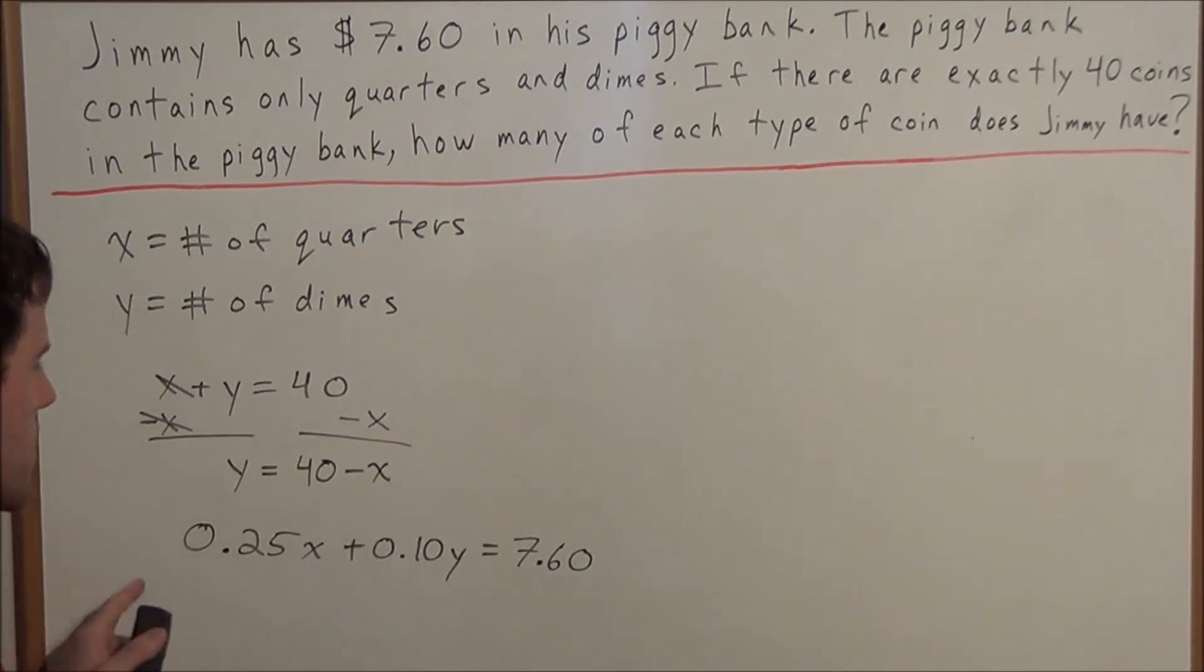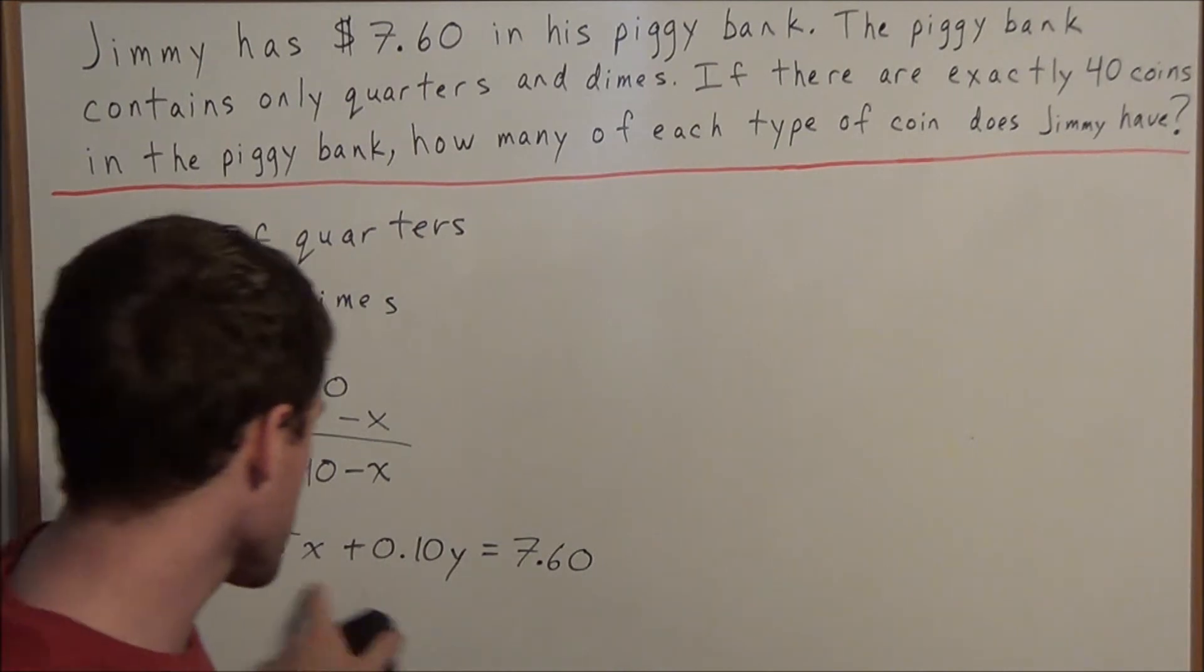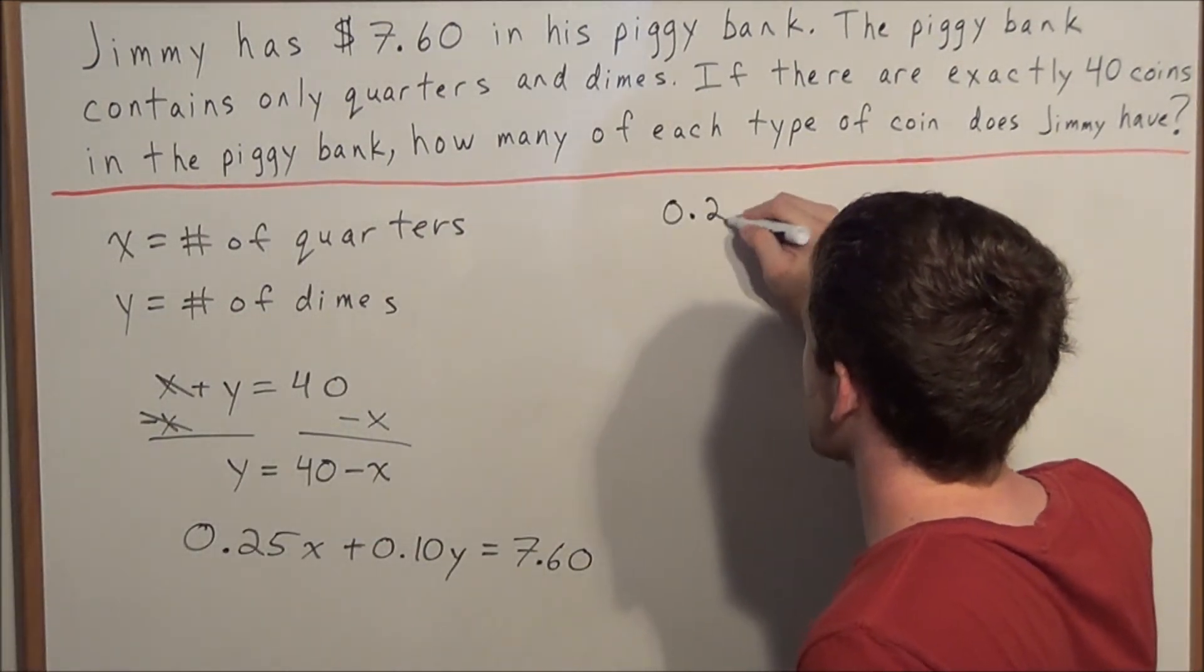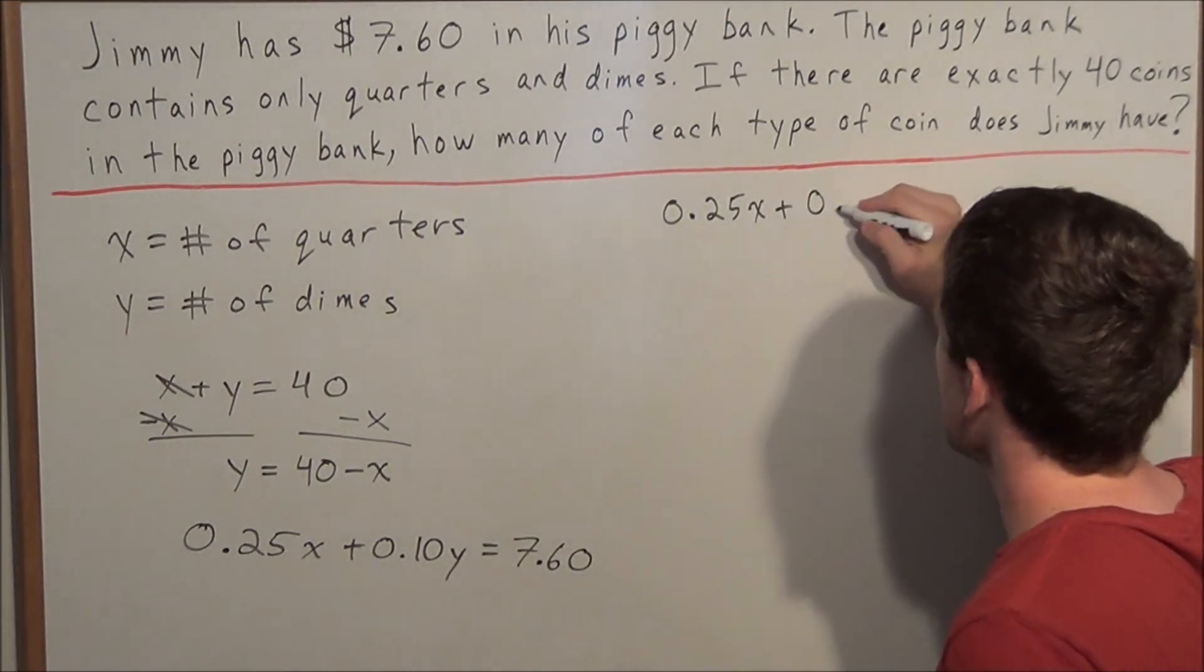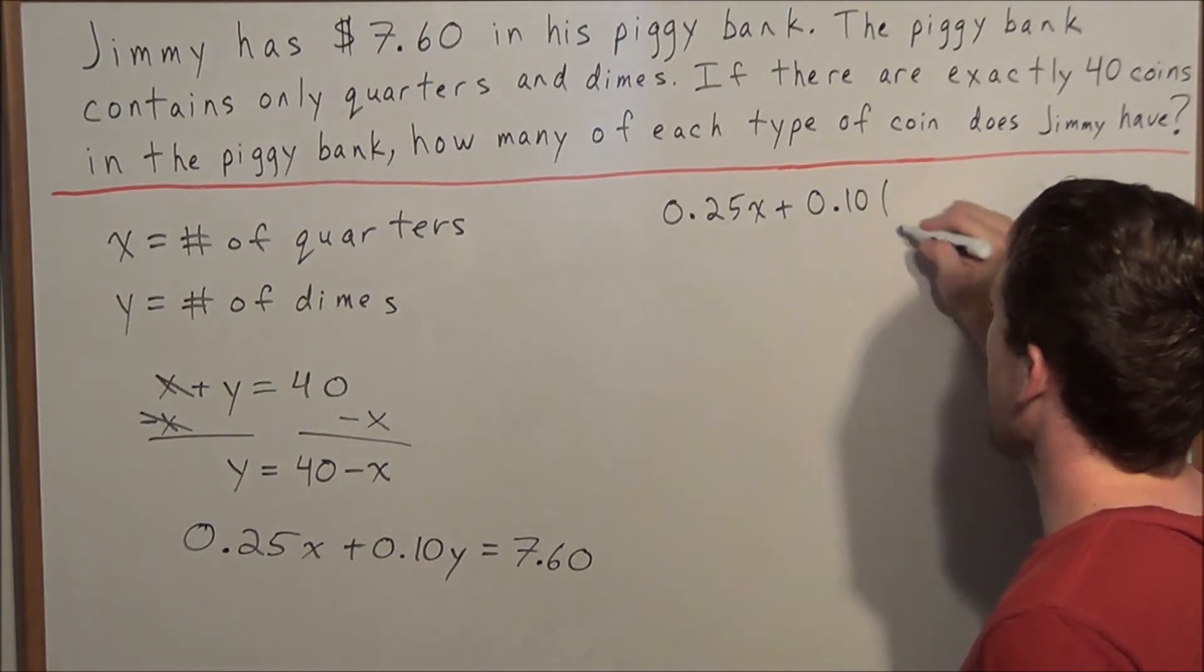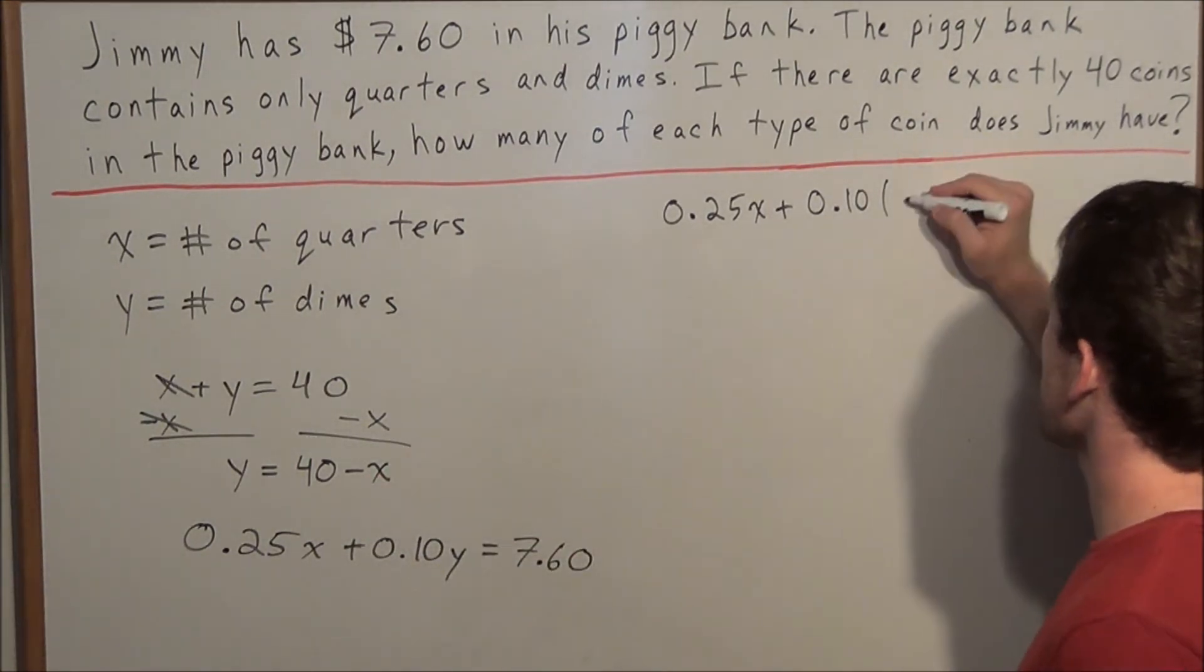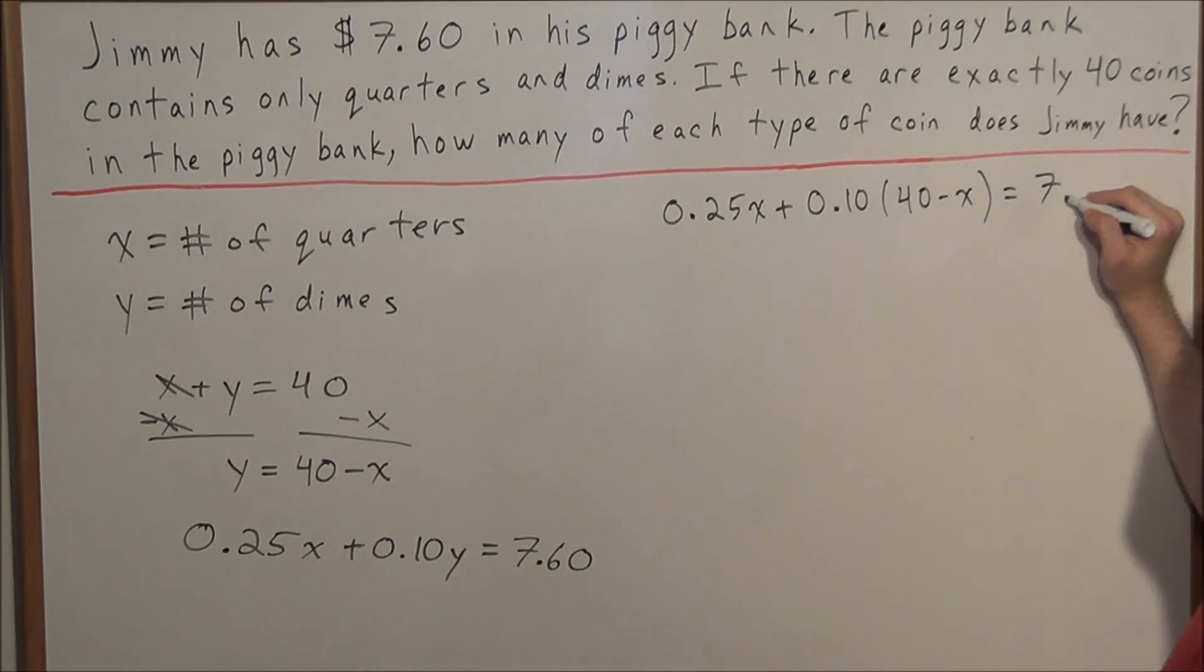And now what this allows us to do is substitute y equals 40 minus x into the second equation, and then we'll have an equation of one variable. So now I'm going to rewrite this equation. We have 0.25 times x plus 0.10 times y, but now instead of y, we're going to replace y with 40 minus x. So we have 40 minus x, and this is all equal to 7.60.